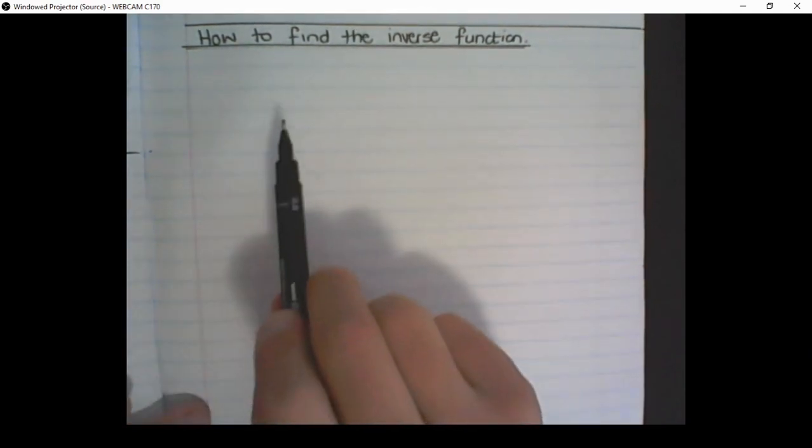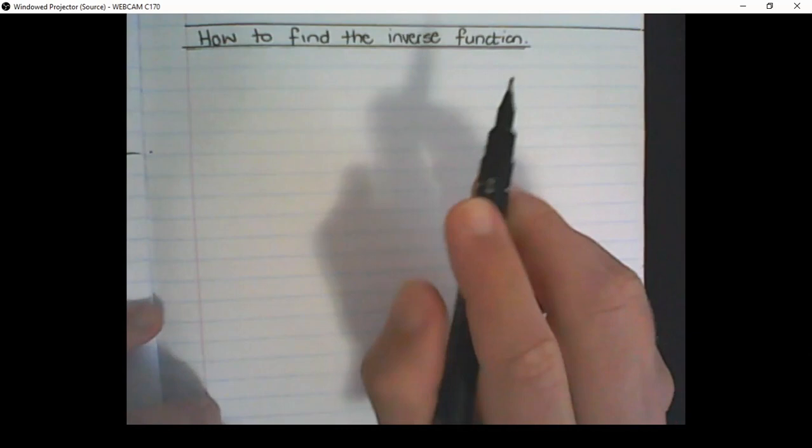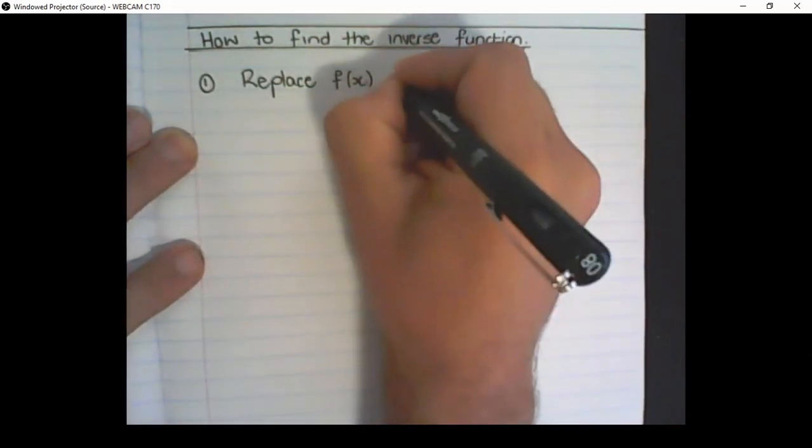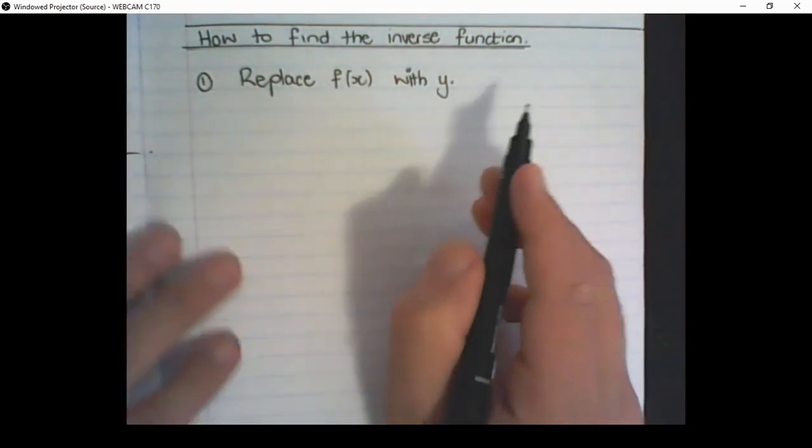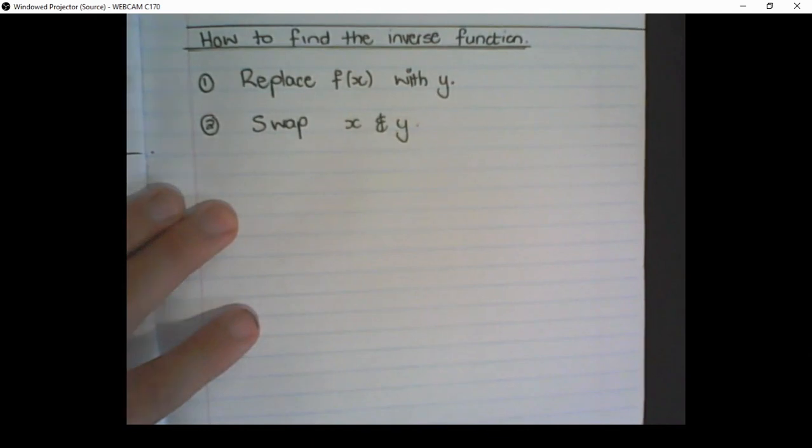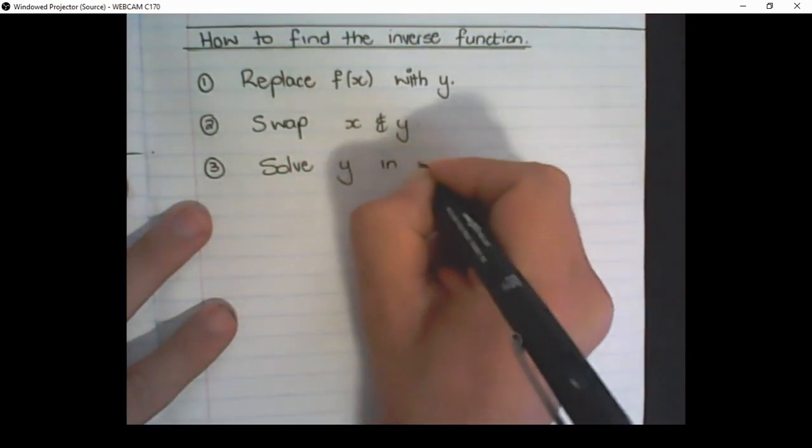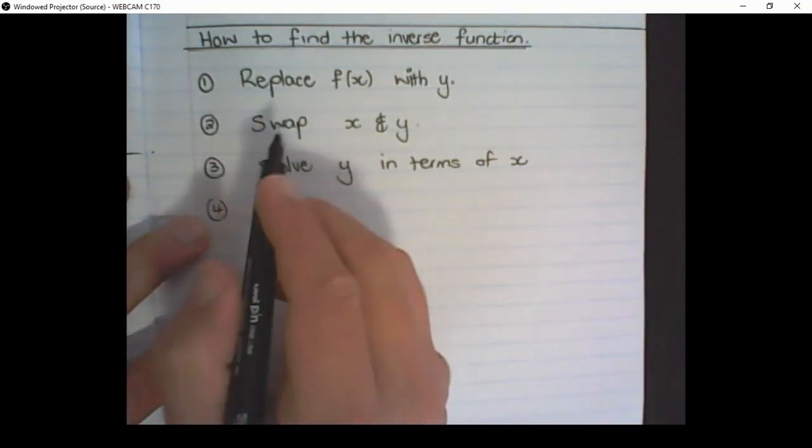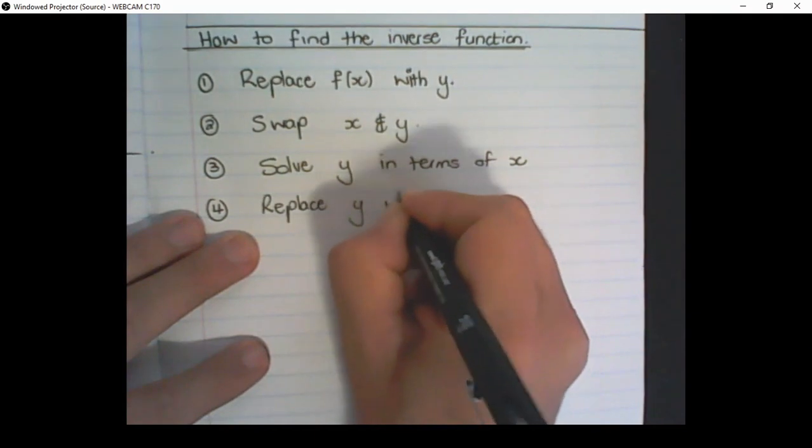So let's go through the steps on how to find the inverse function. We're not going to do it graphically today. We're just going to learn how to find the equation or the rule of the inverse function. The first step is to replace f(x) with y. So we replace the notation of f(x) with a y. The second step is we are going to swap x and y. Then we are going to solve y in terms of x. And then as we started, we do it again. Now we do it in reverse. We replace y with the inverse function notation.